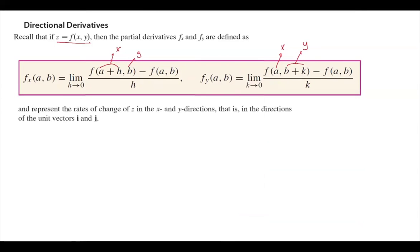These represent the rate of change of the function z in the x direction and y direction. Basically, going back to elementary calculus, these are in the direction of unit vectors i and j. Recall that i is the unit vector (1, 0, 0) and j is the unit vector in the direction of the y-axis, (0, 1, 0).